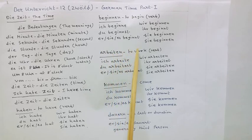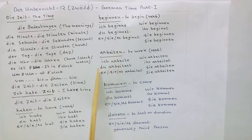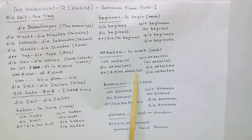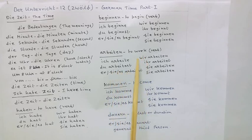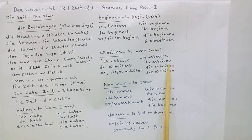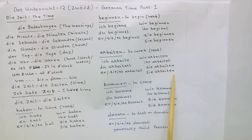Arbeiten — to work. Ich arbeite — I work. Du arbeitest — you work, informal. Er, sie, es arbeitet — he, she, it works. Wir arbeiten — we work. Ihr arbeitet — you all work, informal. Sie arbeiten — they work. Sie arbeiten — you work, formal.